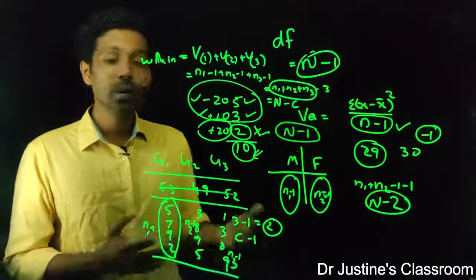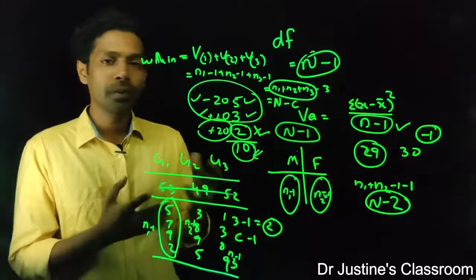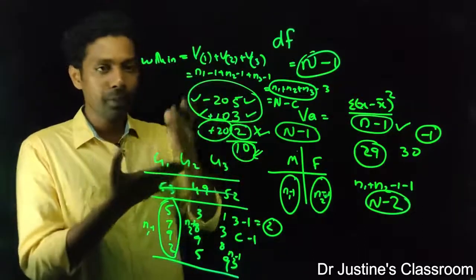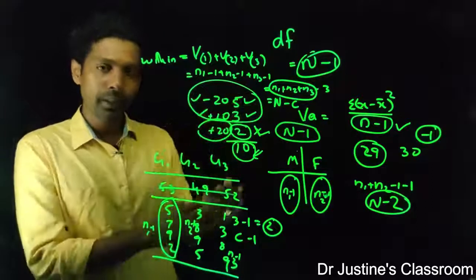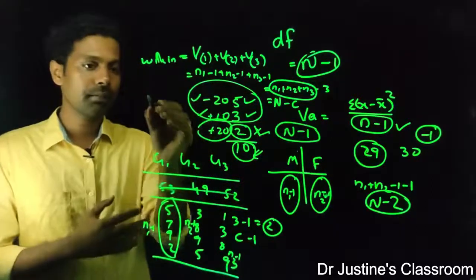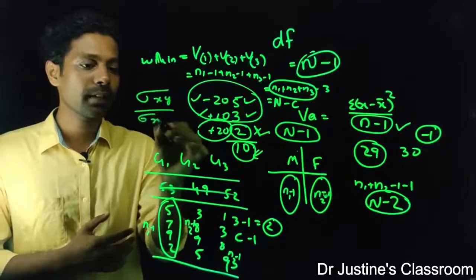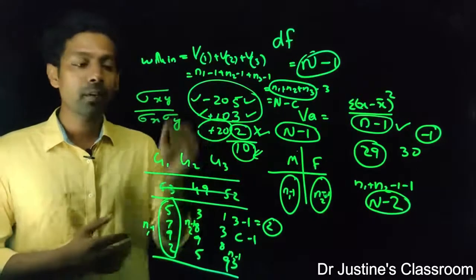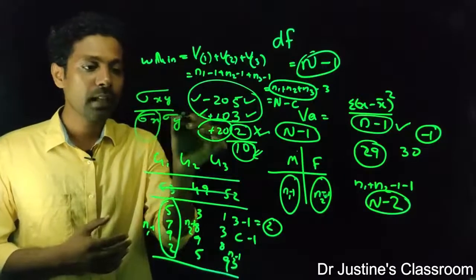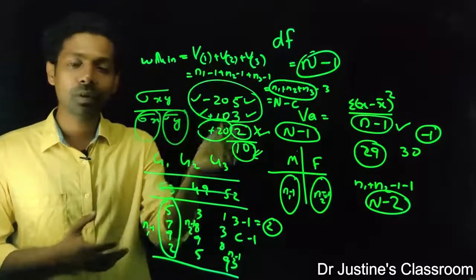When you consider correlation, correlation is basically variance of variable 1, variable 2, the product of it divided by the product of xy divided by sigma x and sigma y. I have two sets of data, x and y. This is correlation.